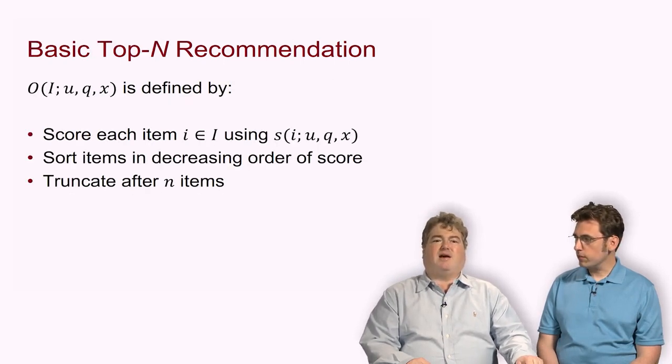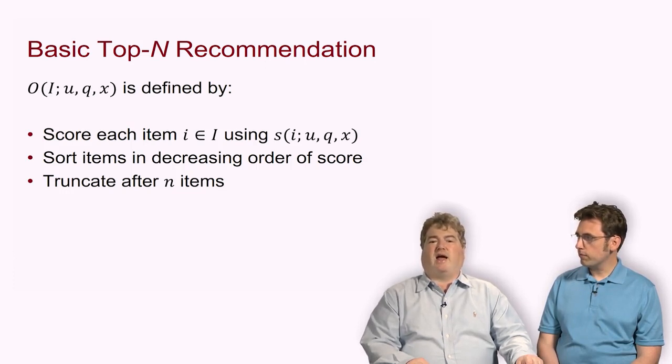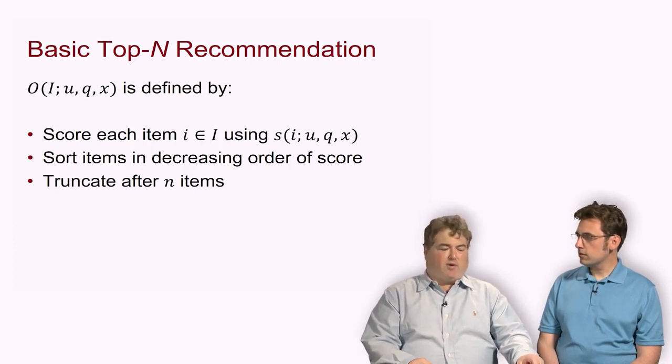When we think of traditional top-N recommendation, the way that systems do it if we don't do anything more creative, we start by computing our scores for every item in our set of items I. We compute the score S, then sort the items in decreasing order of score. The thing with the highest score becomes the first, the lowest score becomes the last. And if we want to recommend N items, we give you back the first N of the items as our ordering. But that's not all we can do.